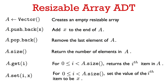Note that the argument i given to get or set must be an integer between 0 and strictly less than the size of the array. If you call these functions with an index outside this range, this results in undefined behavior.